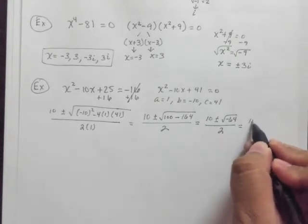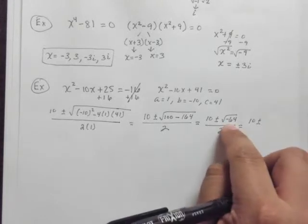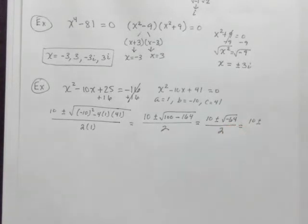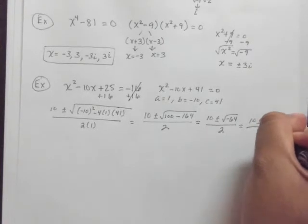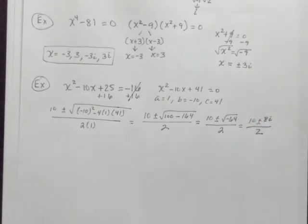And we get 10 plus and minus the square root of negative 64. The square root of 64 there is 8, right? So 8i in this case, all divided by 2.